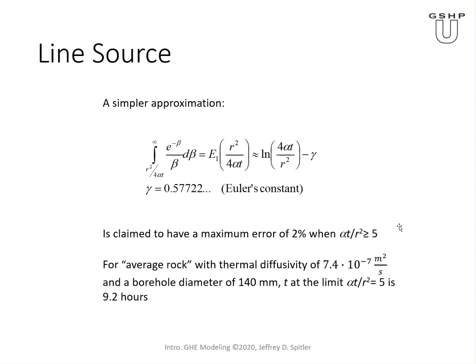As an example, for average rock with thermal diffusivity of 7.4 times 10 to the negative 7th meters squared per second and a borehole diameter of 140 millimeters, t at the limit corresponding to a value of 5 is about 9.2 hours.